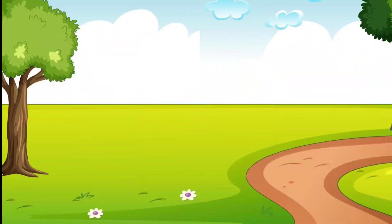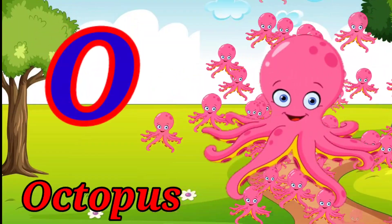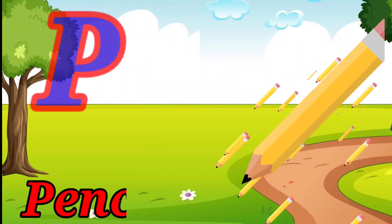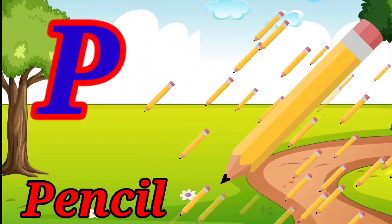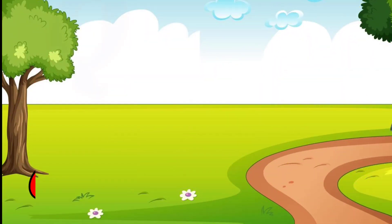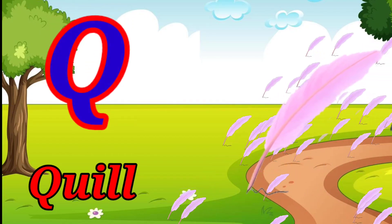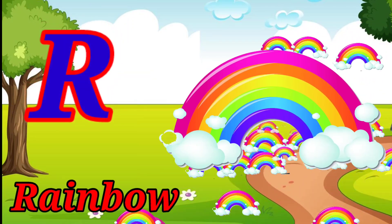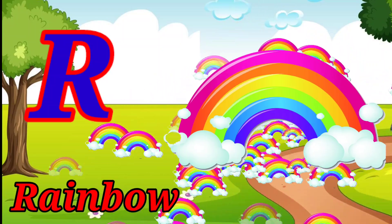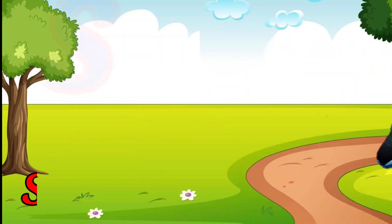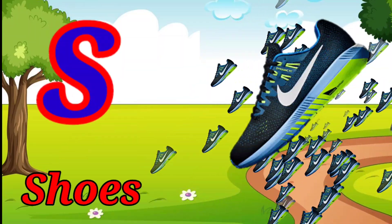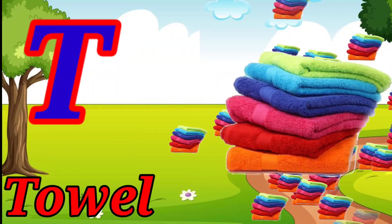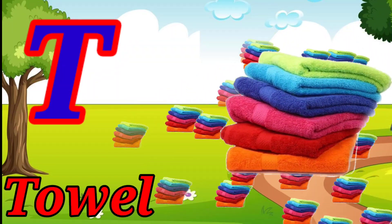O for octopus, P for pencil, Q for quill, R for rainbow, S for shoes, T for towel.